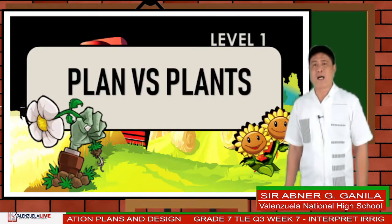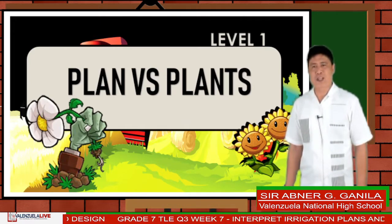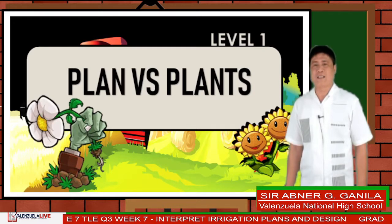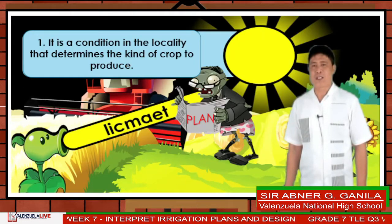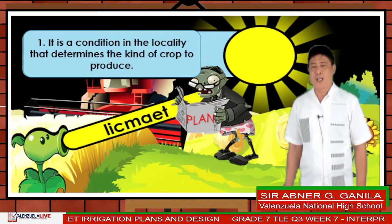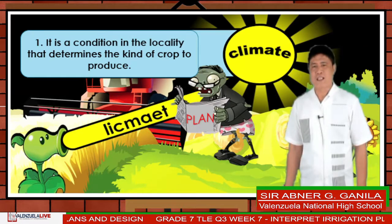Level one: Plants versus Plants. Direction — you are going to rearrange the jumbled letters to form a word. The description given serves as your guide. Number one: it is a condition in the locality that determines the kind of crops to produce. The answer is climate.